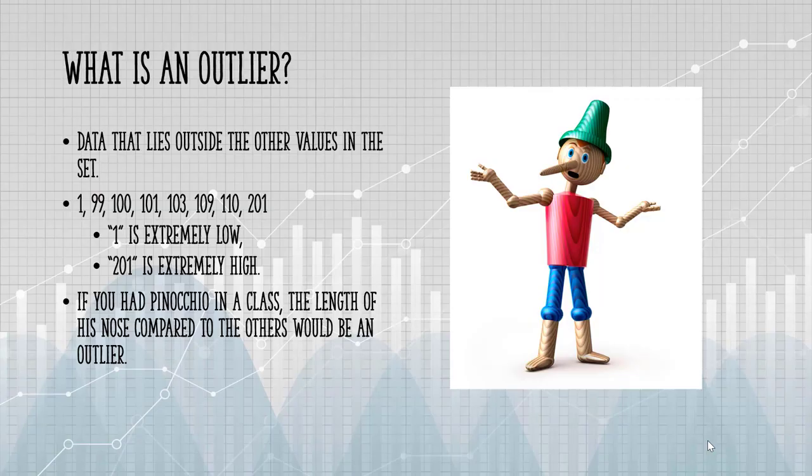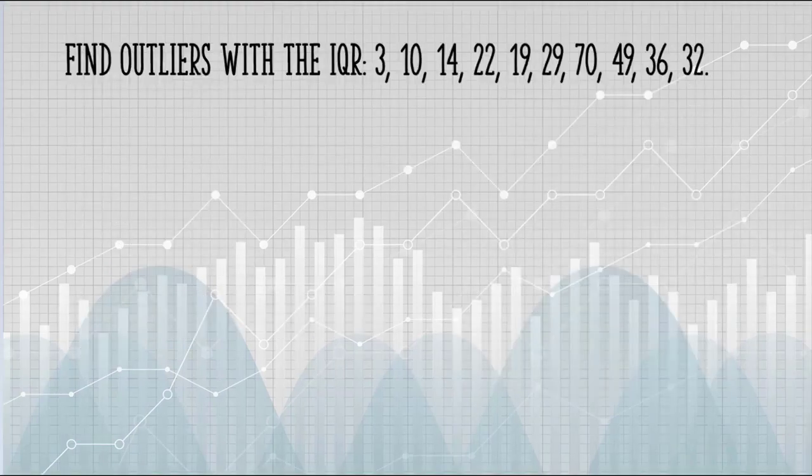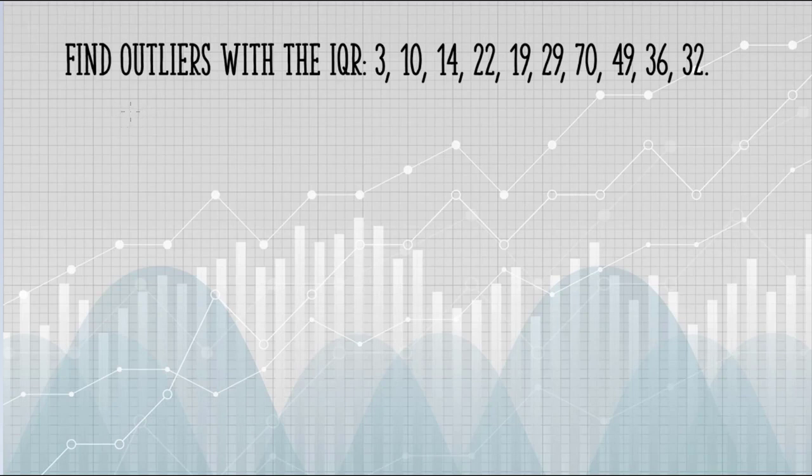If you have Pinocchio in a class, the length of his nose would be an outlier compared to the others in his class. So let's take a look at an example of finding outliers using the interquartile range.